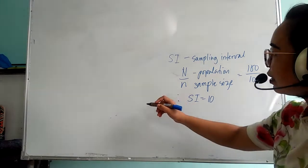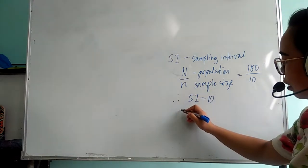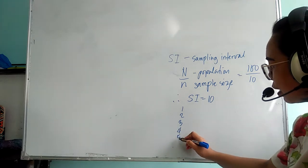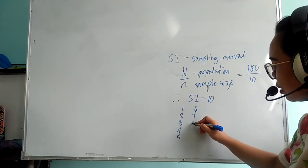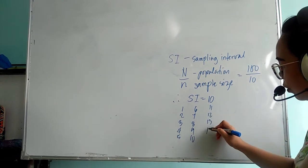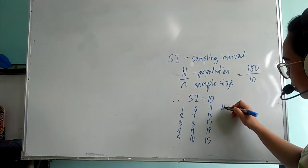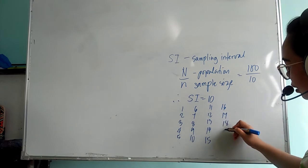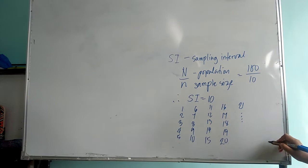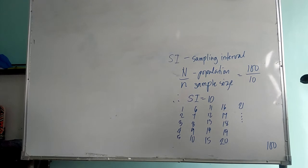Let's say for example you have a list of your population: 1, 2, 3, 4, 5, 6, 7, 8, 9, 10, 11, 12, 13, 14, 15, 16, 17, 18, 19, 20, 21, and so on until you have 100 in your list as your population.